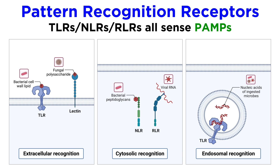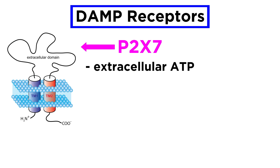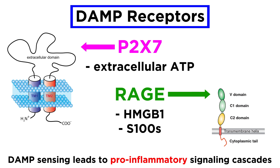So we've discussed the TLRs, NLRs, and RIG1-like helicases, which all sense PAMPs, but what about sensing of DAMPs. There are also some dedicated DAMP receptors. The receptor P2X7 senses extracellular ATP. RAGE is a receptor that senses HMGB1, which is a DNA binding protein that should only be outside the nucleus but within the cell. Once it is extracellular, it becomes a DAMP. RAGE also senses a family of cytosolic calcium-binding proteins called the S100s. DAMP sensing generally leads to pro-inflammatory signaling cascades similar to the ones we've already discussed.